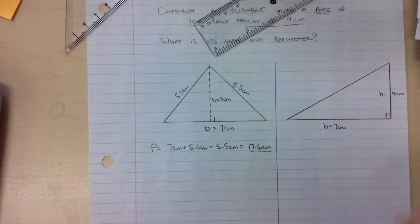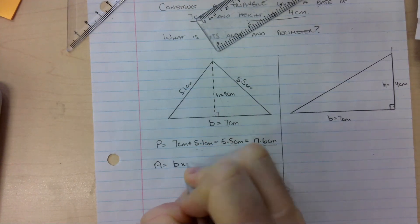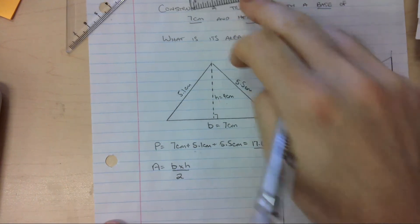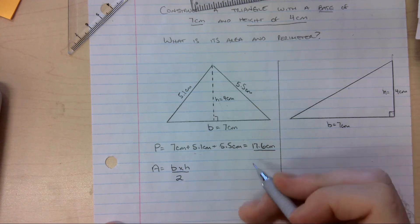But now I'm going to work with area. The way that we find the area of a triangle is using the formula base times height divided by 2, because any triangle is always half of a rectangle. And if a rectangle's area is base times height, we can divide it by 2 to find the area of the triangle.